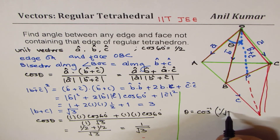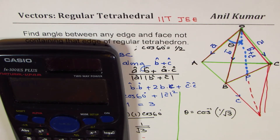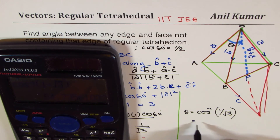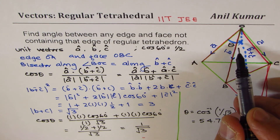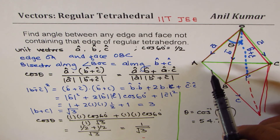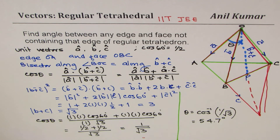Using a calculator: shift cos⁻¹(1/√3) gives approximately 54.7 degrees. So that is the angle θ that an edge of a tetrahedron makes with a face not containing that edge. I thank all my subscribers and viewers for posting excellent questions. Feel free to write your comments, share your views, and if you like and subscribe to my videos, that'd be great. Thank you and all the best.